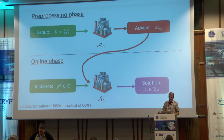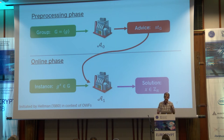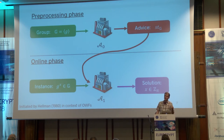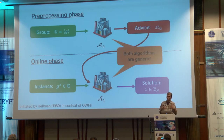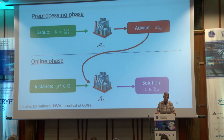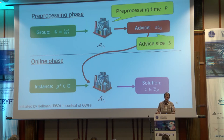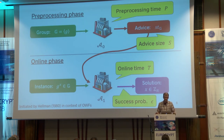The model I'm imagining looks like this. A discrete log algorithm with preprocessing works in two phases. In the preprocessing phase, algorithm A0 takes as input the description of the group G, does some work, and outputs an advice string — a data structure containing what it learned about the group. Then in the online phase, algorithm A1 takes as input the problem instance g to the x and has to output the discrete log x. Both of these algorithms are going to be generic. When measuring complexity, we can look at preprocessing time, the size of the advice string, the online time t, and the success probability over the choice of group and challenge.